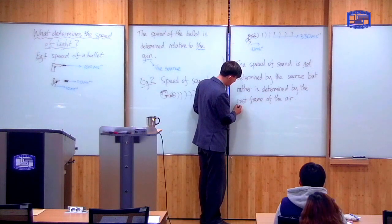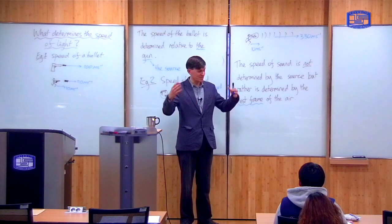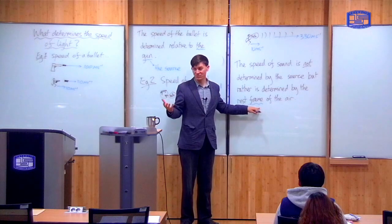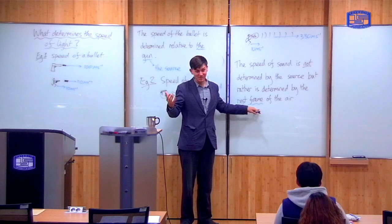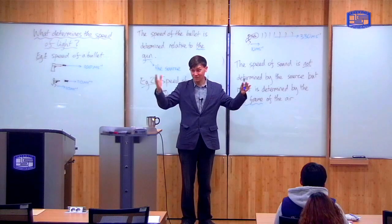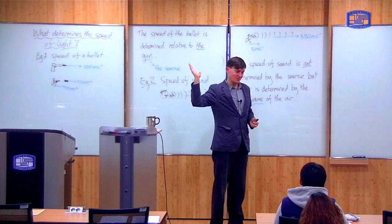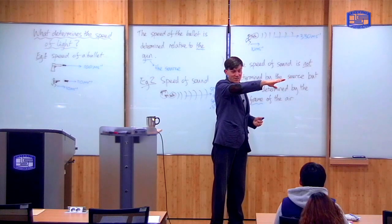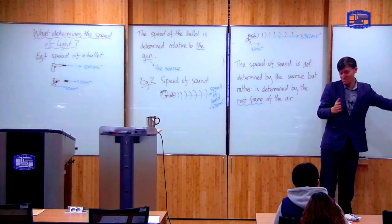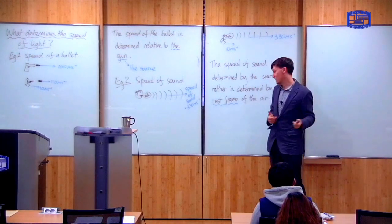So I used a couple of terms here which have a technical meaning, so let me just define them. The rest frame of the air means the frame, the observer velocity, for which the air is stationary. So the rest frame of the air in this room is just standing still, it's not moving. Whereas if there was a wind, if we go outside and it's a windy day and there's a wind of 20 meters per second, then the rest frame of the air is 20 meters per second in this direction. So rest frame just means the frame, the reference, in which the air is stationary, not moving.